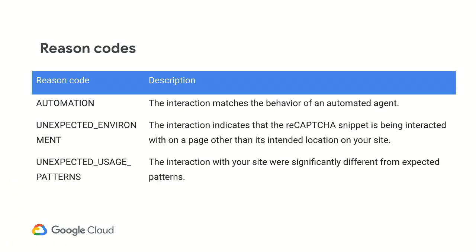Along those same lines, we have our reason codes. Going back to the scraping example: if we identify something as an automation attack, maybe it doesn't matter if it's on your homepage — maybe you don't care if folks are scraping basic information you'd like the whole world to know. But rarely would you want to see that on a login page or a message-sending page or various other avenues for abuse within your site.